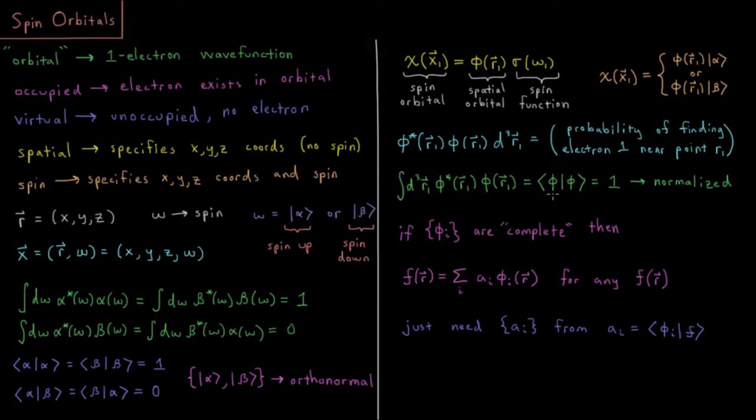We could also indicate that as the Dirac bracket phi phi, which would be equal to 1, meaning that this spatial orbital we have is a normalized orbital.